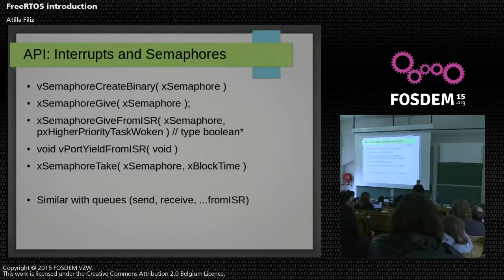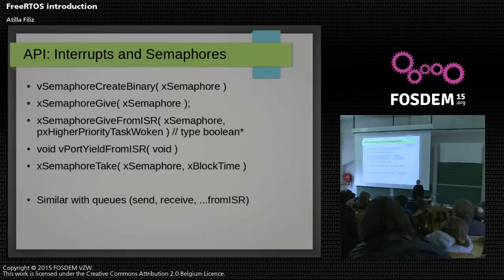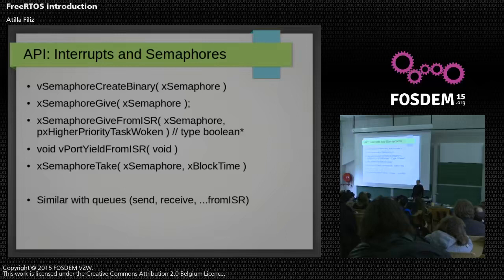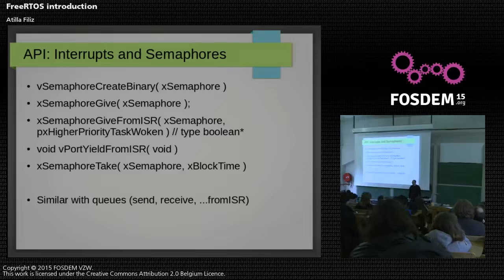We have a semaphore API. Basically you create a binary semaphore and you give and take them. Something important about interrupts is that many API functions have their 'from ISR' variants. For example, there is xSemaphoreGive and xSemaphoreGiveFromISR. If you're running from within an interrupt service routine, you need to use the FromISR routines so it doesn't mess with context switching. Messaging queues also have their variants with send, receive, and FromISR.